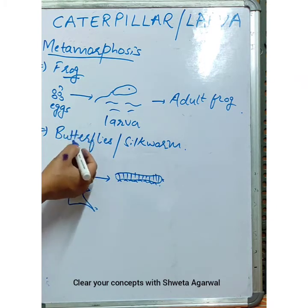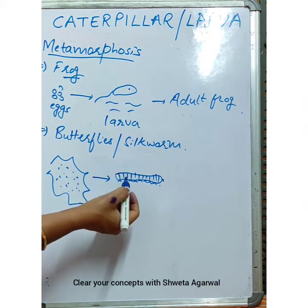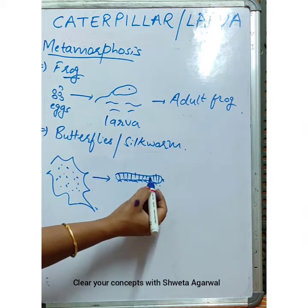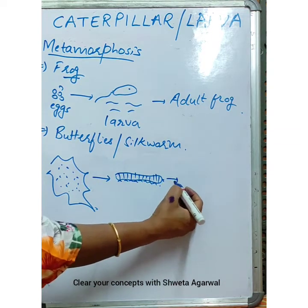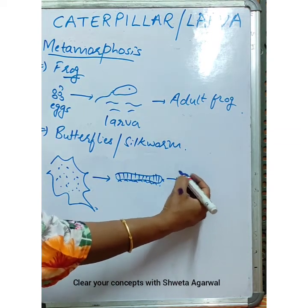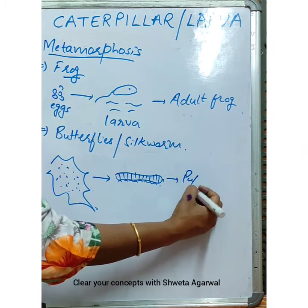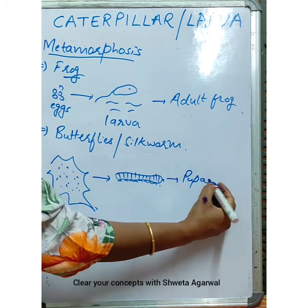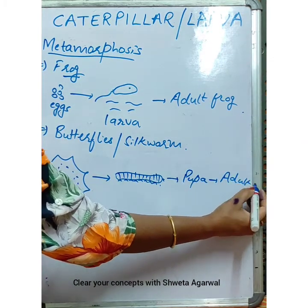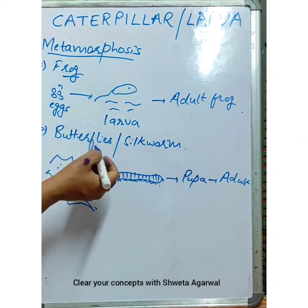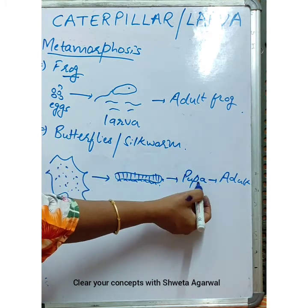The young one of the butterfly will also feed voraciously on the leaves all around it. This then undergoes a stage where it builds a cocoon around itself, becomes a pupa, and from the pupa the adult emerges. The silkworm, the butterfly, or the insect comes out from the pupa.